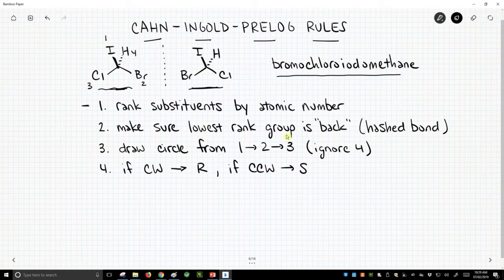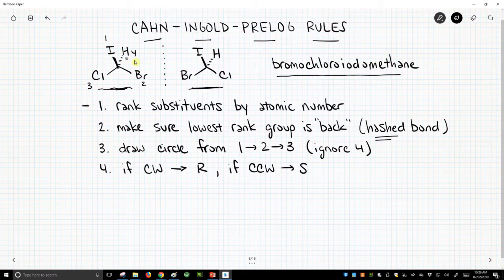Then we make sure the lowest rank group, the number four group, is in the back or the hashed position. So the hydrogen is hashed. I've drawn them intentionally to set us up to do this quickly.